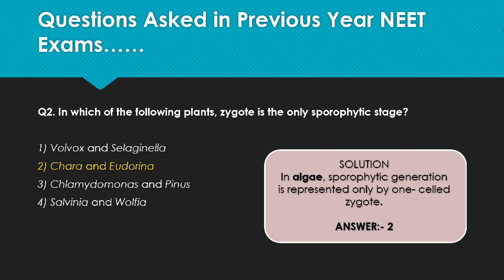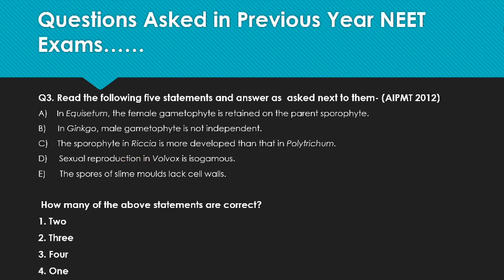Now let's look at the next question: read the following five statements and answer as asked. Students are often scared of such questions, but we simply read each statement one by one and analyze it. Statement A: in Equisetum, the female gametophyte is retained on the parent sporophyte. This feature ultimately leads to seed habit, and we discussed in previous videos that plants like Selaginella and Salvinia develop seed habit — Equisetum does not. So this statement is wrong.